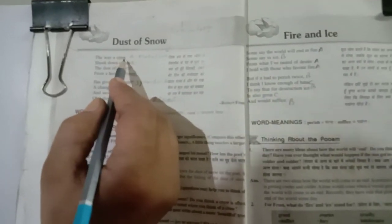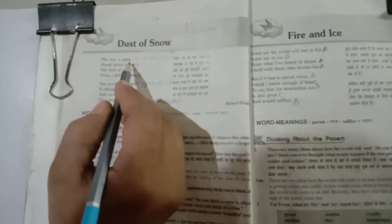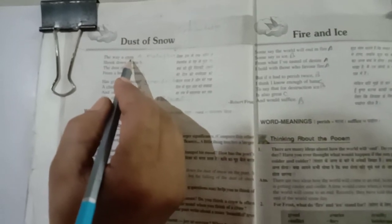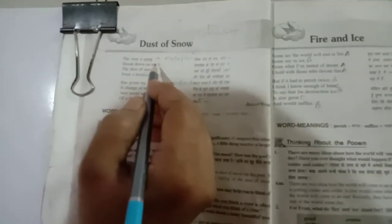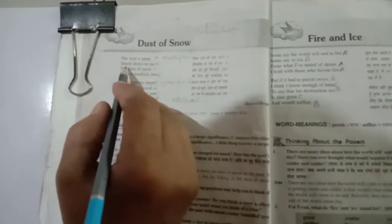But symbolism is here in this poem. And the crow is symbolism of sadness, sorrow. Shook, moved with a jerk. Dust of snow.